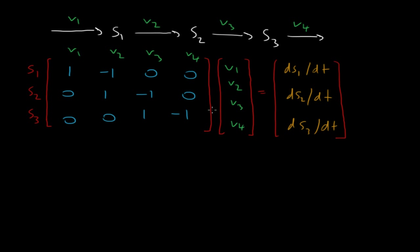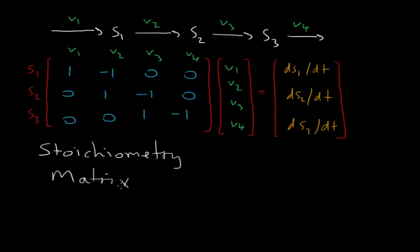This matrix is called the stoichiometry matrix, and it's often given the symbol N — bold, to indicate that it is a matrix. Similarly, the reaction rates vector is given the symbol V, also bold. And finally, on the right-hand side, we have the vector of rates of change.